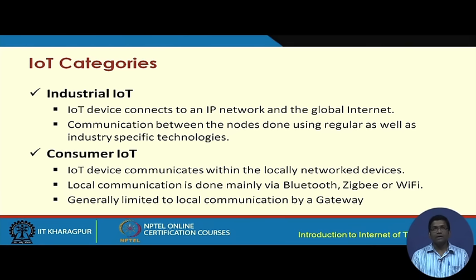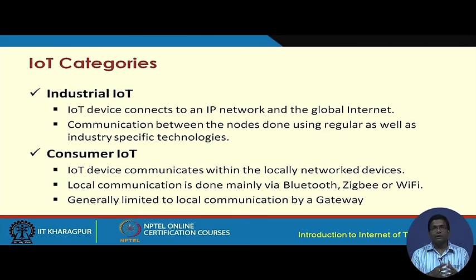IoT can be categorized into two types. Consumer IoT is what most people typically use — different devices communicate with one another through local networks, and further communication can also take place over the internet depending on requirements. Local communication is typically done via Bluetooth, Zigbee, or Wi-Fi, and is constrained within the domain of the IoT gateway.